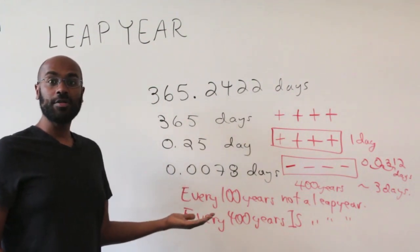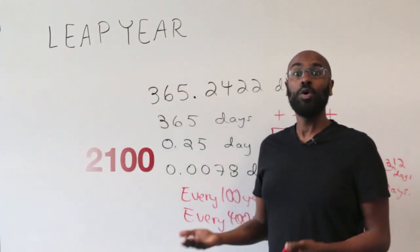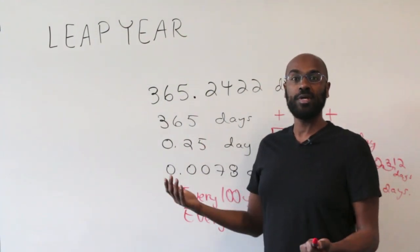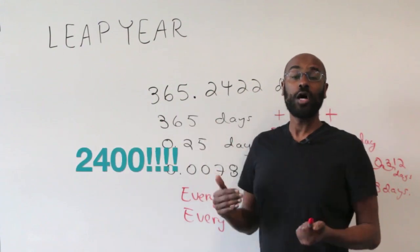So for example, the year 2100 will not be a leap year. The year 2200 won't be as well, and 2300 won't be, but 2400 will.